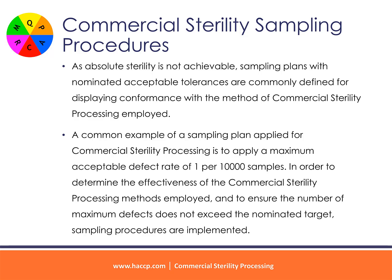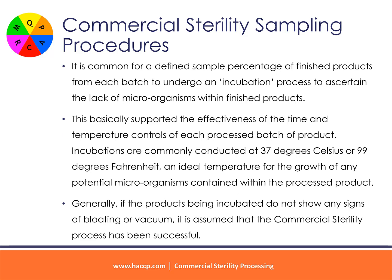Commercial sterility sampling procedures: as absolute sterility is not achievable, sampling plans with nominated acceptable tolerances are commonly defined for displaying conformance with the method of commercial sterility processing employed. A common example is to apply a maximum acceptable defect rate of 1 per 10,000 samples. In order to determine the effectiveness of the commercial sterility processing methods employed and ensure defects do not exceed the nominated target, sampling procedures are implemented. It is common for a defined sample percentage of finished products from each batch to undergo an incubation process.